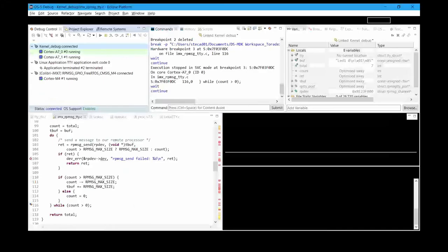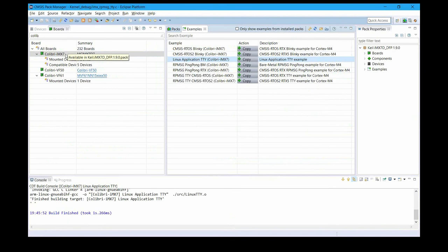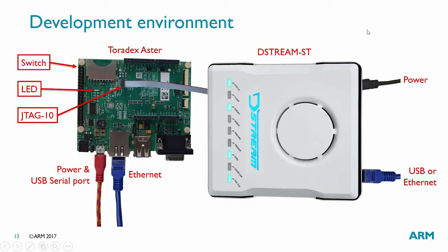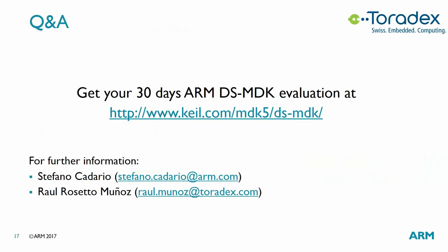Another question: is OpenAMP and RPMSG open source? Yes — you can find the RPMSG module code in the Linux kernel source, and OpenAMP is also an open project, so the code is easy to find. Another question about whether the webinar was too advanced: of course it's possible to use the DS-MDK for simpler debugging — you can just debug on the M4 alone if the Linux side is sorted out. You can also add plugins to Eclipse, though the debugger and compiler are DS-MDK-specific and designed for heterogeneous devices.